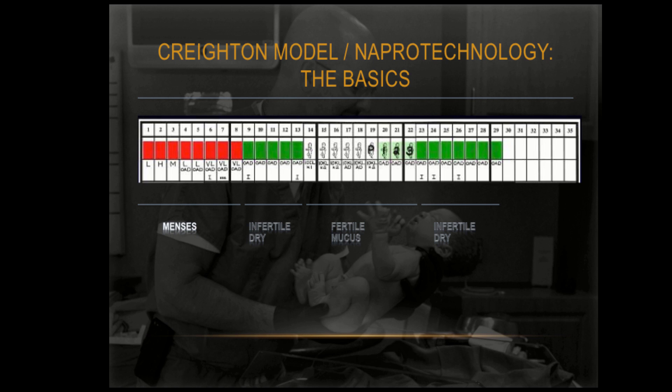Let's look now at the menstrual cycle utilizing a Creighton Model NaProTechnology menstrual chart. This is a fundamental part of the Creighton Model Fertility Care approach. We'll talk much more about that in other discussions. Let's look first at this chart and the way that it's laid out.